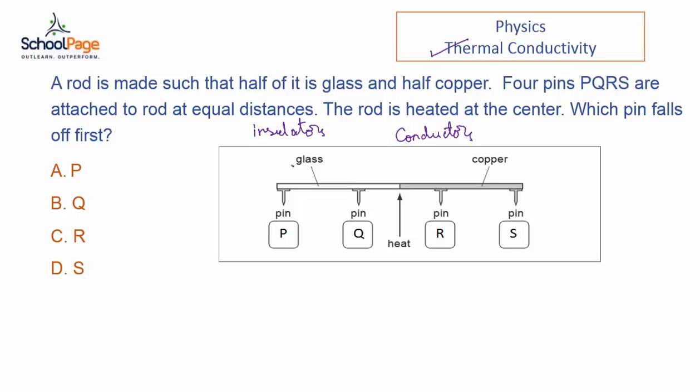Observe that there are two materials in the rod: one is glass and the other is copper. Copper, being a metal, has higher thermal conductivity values, and because of this, the rate of heat transfer is also more. The thermal conductivity value of glass is very less, because of which it is considered an insulator. There are four pins: P and Q on the glass rod, whereas R and S on the copper rod.